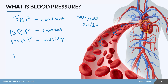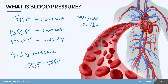Sometimes you'll also hear us mention pulse pressure. Pulse pressure is the difference between systolic and diastolic — SBP minus DBP. It gives us an idea of how hard the heart is working, and we use it a lot in neuro or cardiac patients.